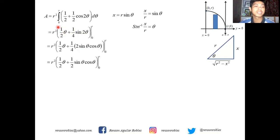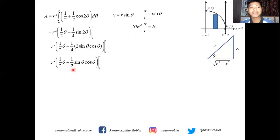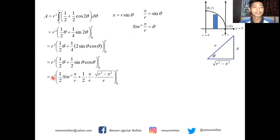Writing back in terms of x and r: r²[(1/2) arcsin(x/r) + (1/2)·(x/r)·(√(r² − x²)/r)] evaluated from 0 to r. Here, sin θ is replaced by x/r, and cos θ is the adjacent side over hypotenuse = √(r² − x²)/r by the SOHCAHTOA principle. We are now ready to substitute the upper and lower limits.